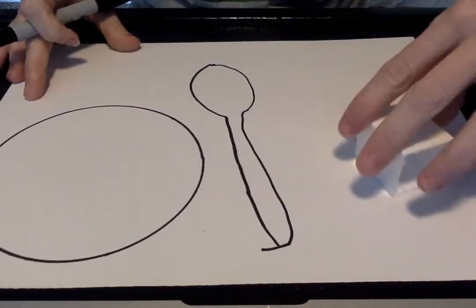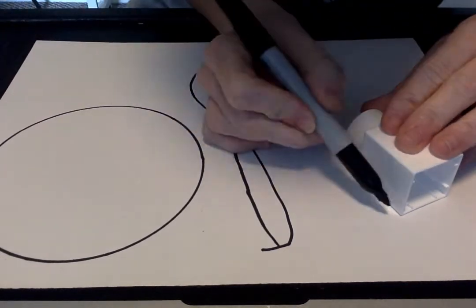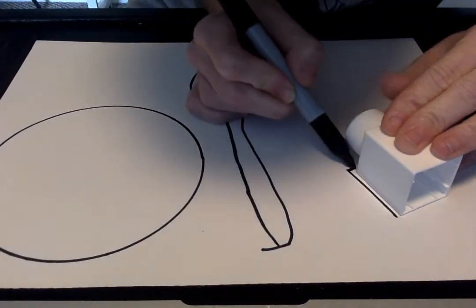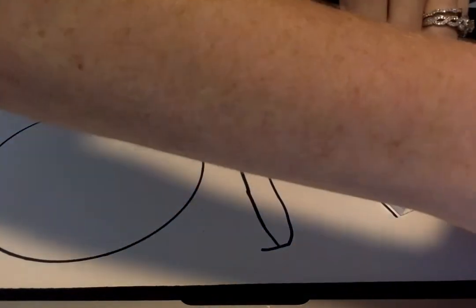Now I'm going to take my block and I'm going to put it this way. I'm going to trace. So remember to go real slow around your object.